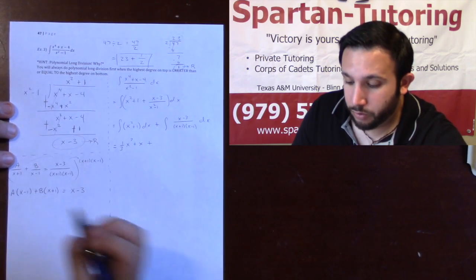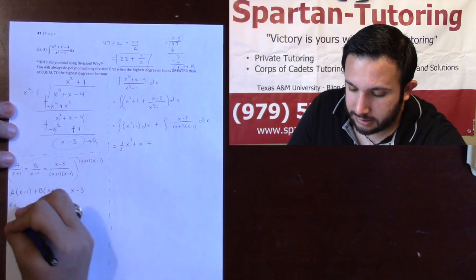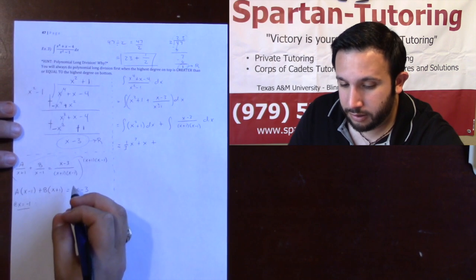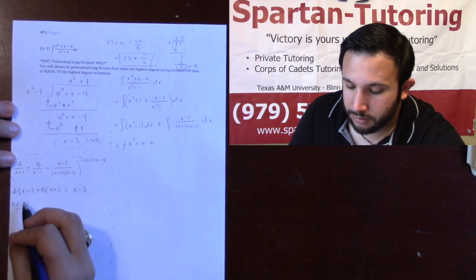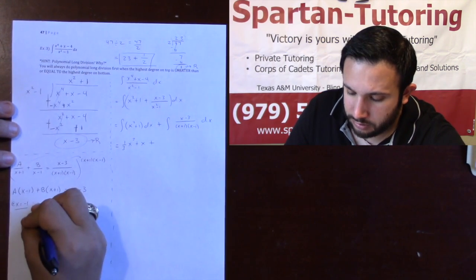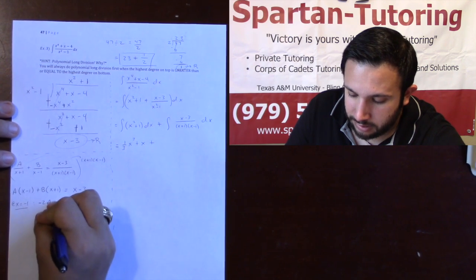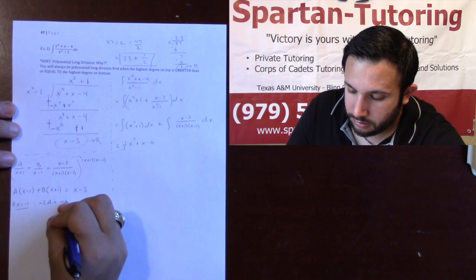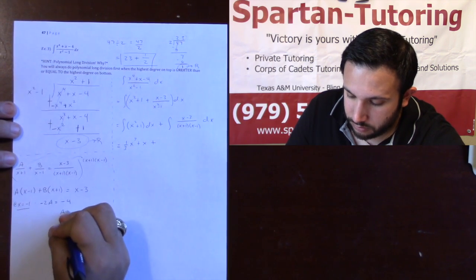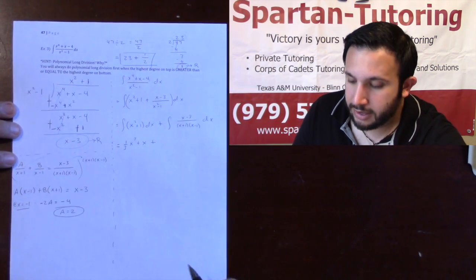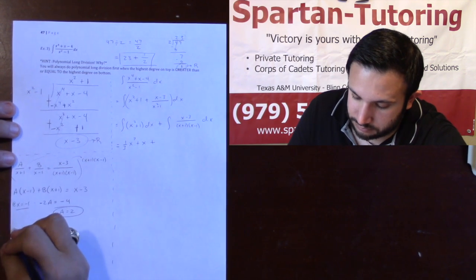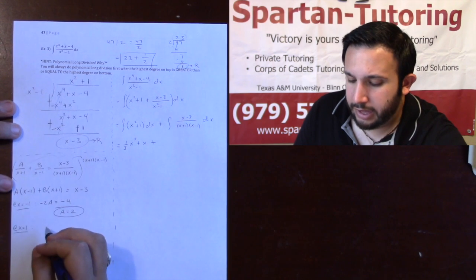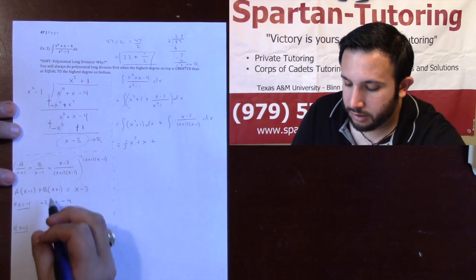Okay? Now I can get actually both freebies, because at x equals negative 1, the b is going to go away. And so, when I plug negative 1 into every x, minus 1 minus 1, I have a minus 2a, is equal to minus 1 minus 3, that's minus 4, I get that a is equal to 2.